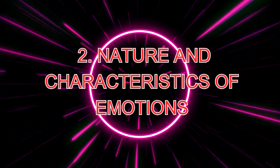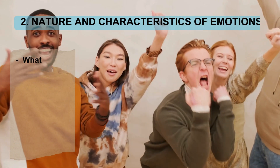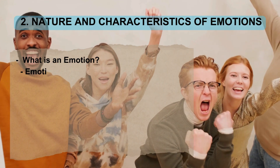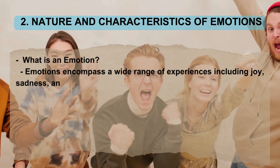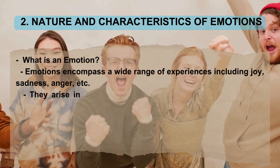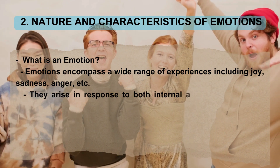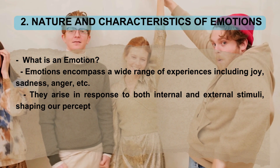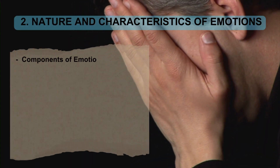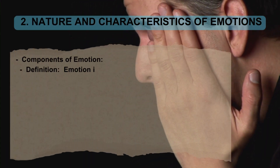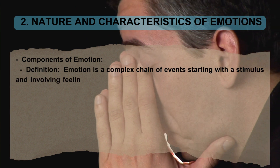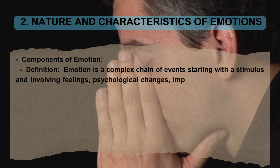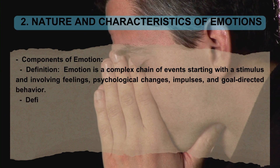Nature and characteristics of emotions — what is an emotion? Emotions encompass a wide range of experiences including joy, sadness, anger, etc. They arise in response to both internal and external stimuli, shaping our perceptions and behaviors. Emotion is a complex chain of events starting with a stimulus and involving feelings, psychological changes, impulses, and goal-directed behavior.